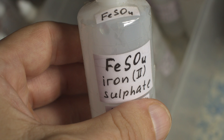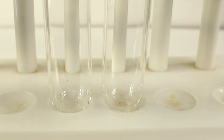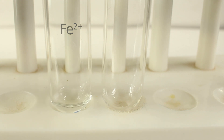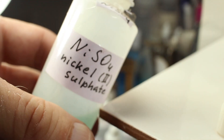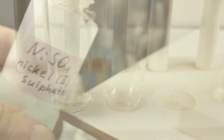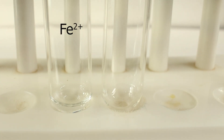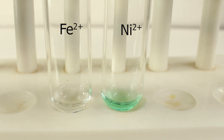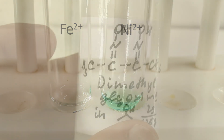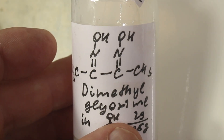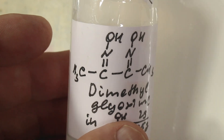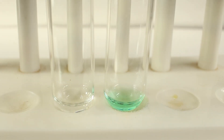As my control I use iron-2-sulfate, which is also a green solution. And nickel-2-sulfate as the substance which is supposed to give a positive result. Dimethylglyoxime is a white organic solid which is soluble in alcohols. Here I use a solution of dimethylglyoxime in propan-2-ol, about 2 grams in 125 grams of propan-2-ol.